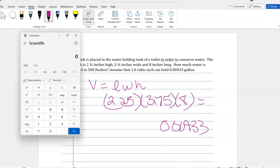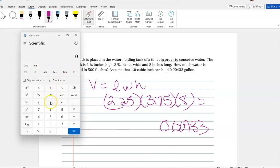Okay, so I got 2.25 times 3.75 times 8. So that's how many cubic inches in one flush, but I'm going to do this 500 times.